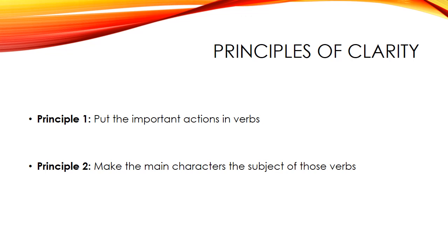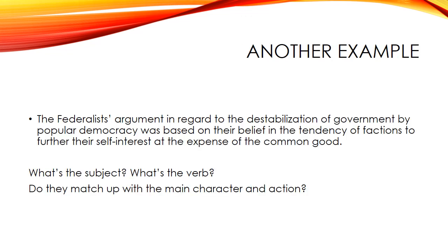Let's state our first two principles of clarity and style. First principle: put the important actions in verbs. It's much easier to understand what's happening in your writing if the verbs you use are the actions you're trying to demonstrate. Make sure the verbs match up to the actions that are occurring. Second principle: make the main characters — the people, things, or ideas performing the actions — the subjects of the verbs. It's much easier to understand when we know who is doing what. I'll mostly focus on actions here and talk more about characters in a future presentation.